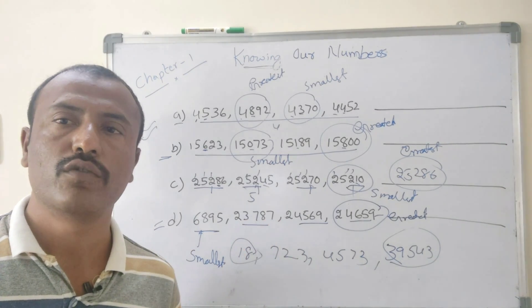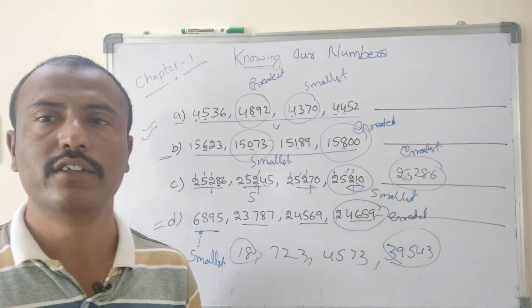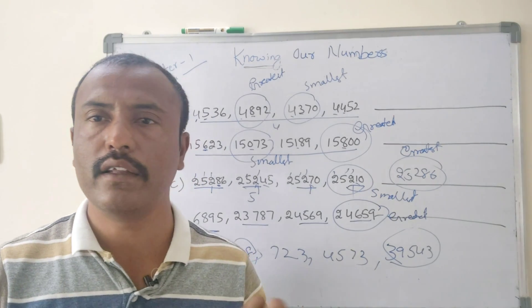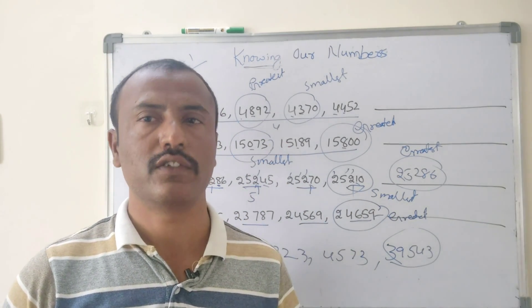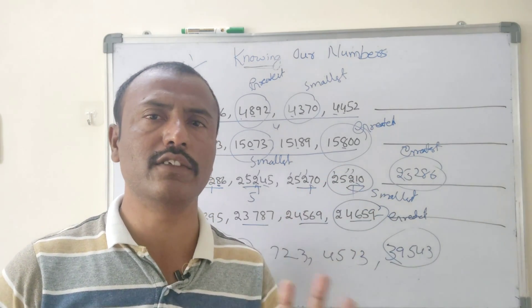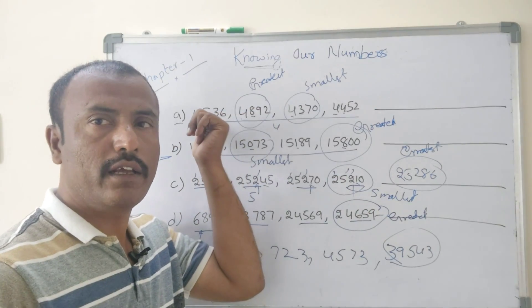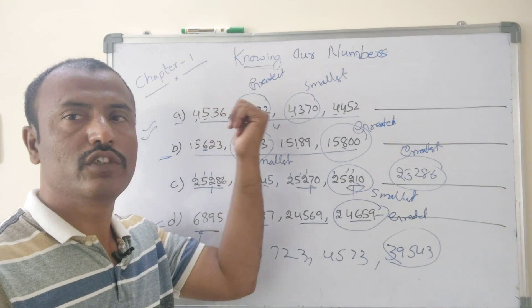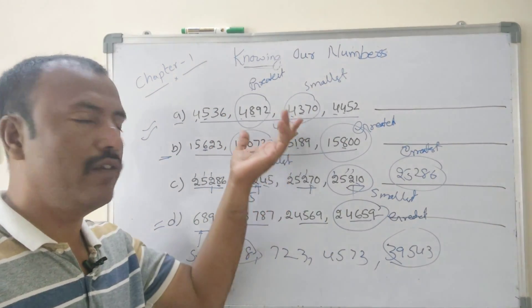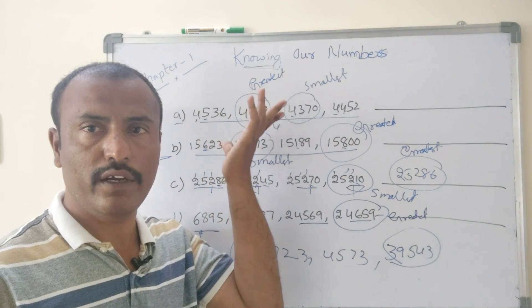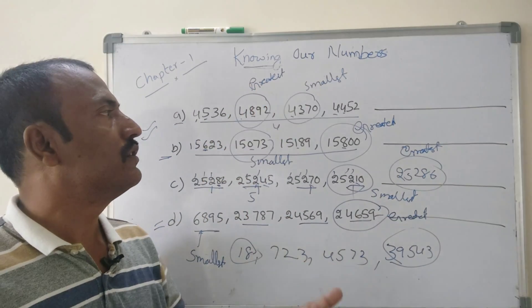Comparison of numbers summary: in a series, whichever number has more digits is the greatest number. If digits are equal, compare with the highest place value. You can find the smallest and greatest values this way. Next chapter, next video.